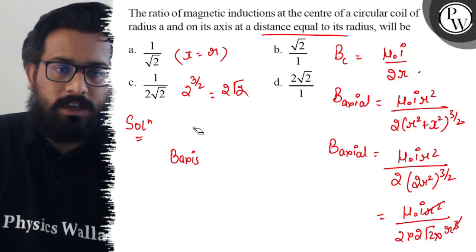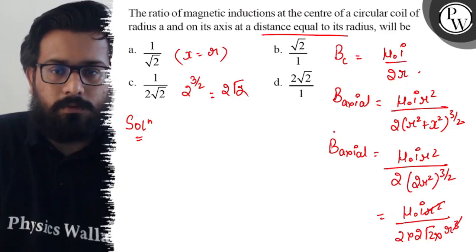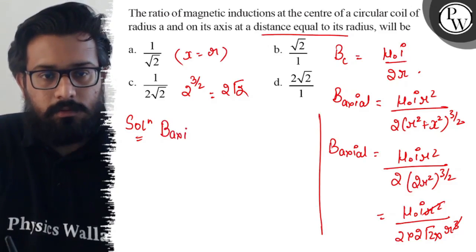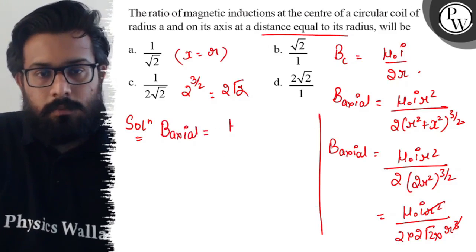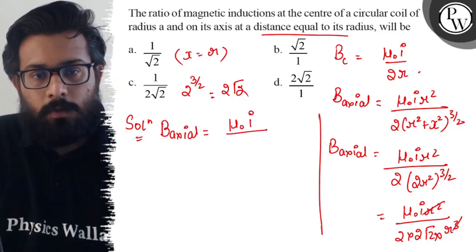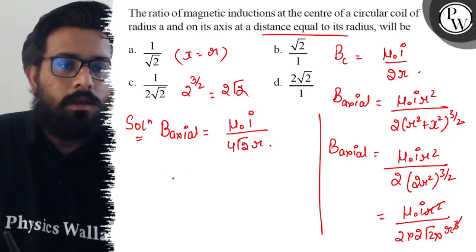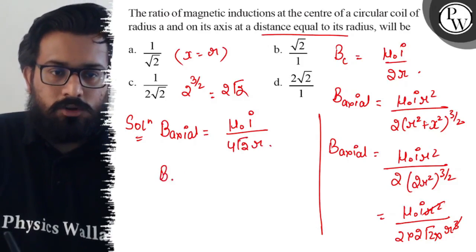So this comes out to be Bx = μ₀I upon 4 root 2. Now taking out the ratio.